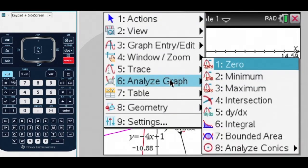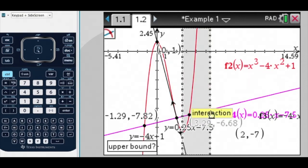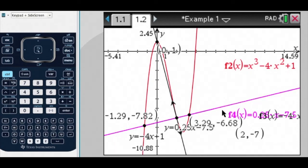Analyze Graph, Intersection, I want the purple graph and the red graph, and the lower bound is here, the upper bound is here, and there is my other point of intersection.